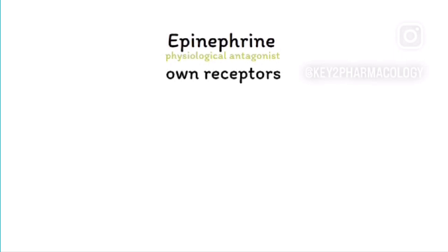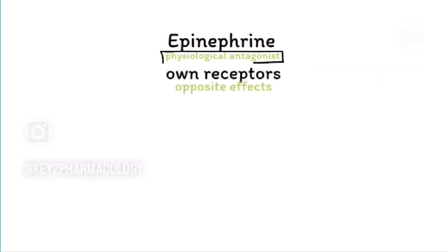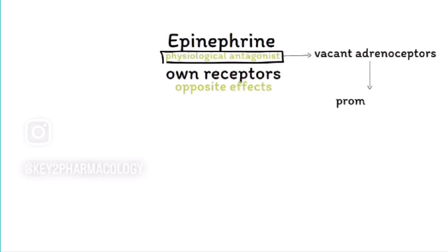As a physiological antagonist, epinephrine produces opposite effects to histamine. It occupies the vacant adrenoceptors and produces prompt relief of symptoms.